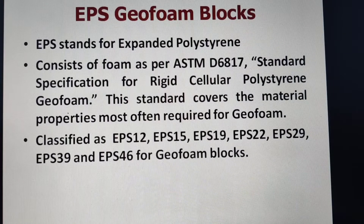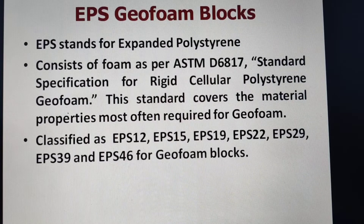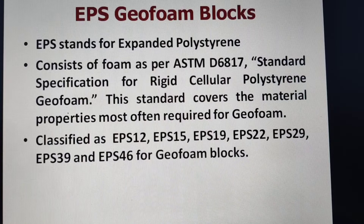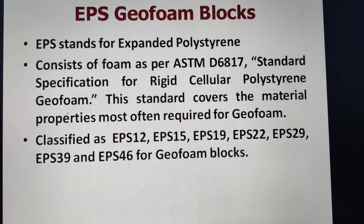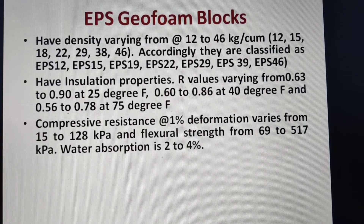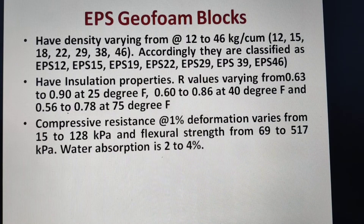These blocks are classified as EPS 12, EPS 15, EPS 19, EPS 22, EPS 29, EPS 39, and EPS 46. They have density varying from about 12 to 46 kg per cubic meter.